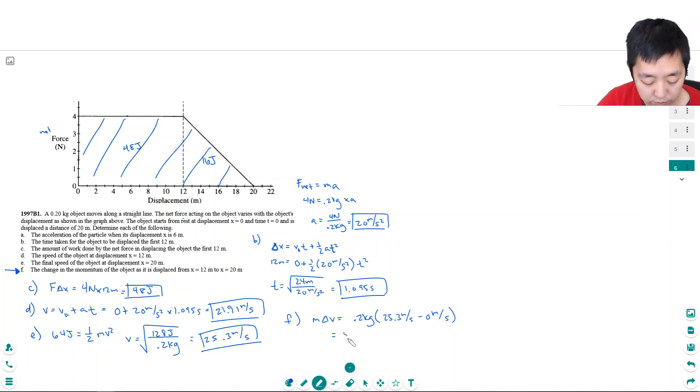I typed in the wrong number and I got 5.06 kilograms meters per second.